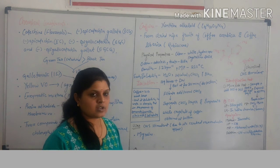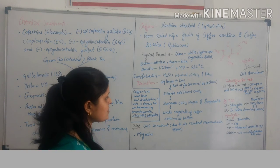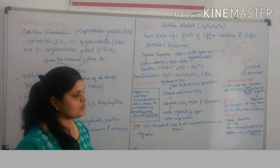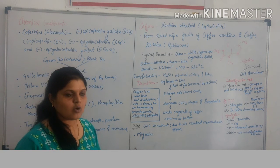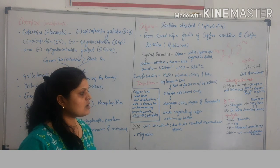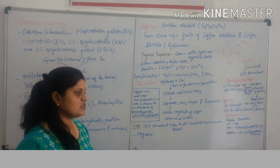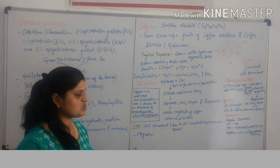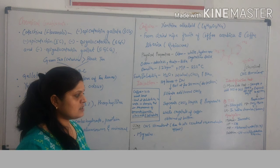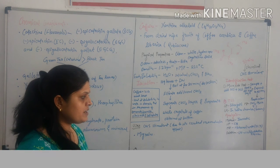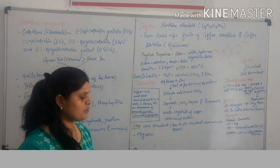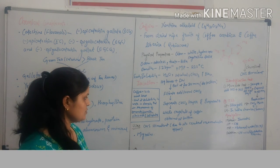Caffeine is analyzed by isocratic elution method. C18 column is used as stationary phase. Methanol-water 25:75 combination is used as mobile phase. UV-visible detection is used for detection at 254 nanometer wavelength.